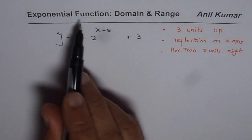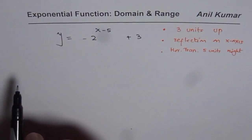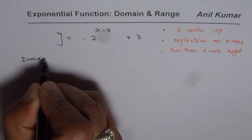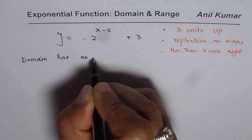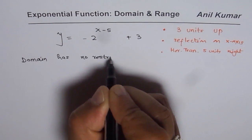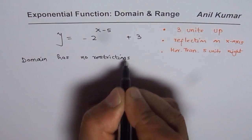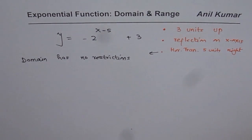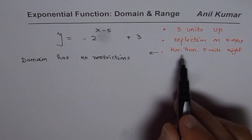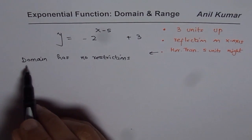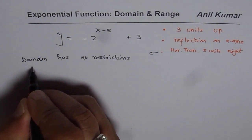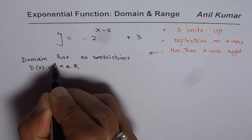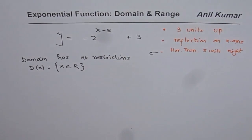For exponential functions, the domain has no restriction. That is the reason why horizontal translations have no effect on the domain. So the domain for this function will be x belongs to all real numbers.